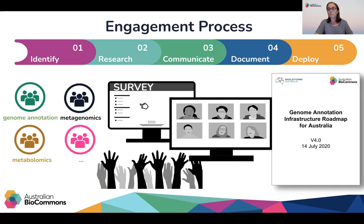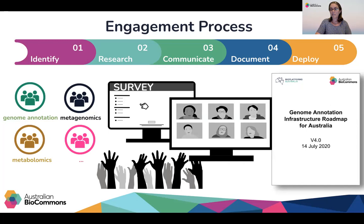To effectively understand researcher challenges and possible solutions, we have developed a five-step engagement process. In the first step, we identify communities of researchers that have known infrastructure challenges, largely defined by a biological method or technique in the life sciences field, such as de novo genome assembly, genome annotation, microbiome analysis or proteomics and others. The second step in the process is to research and review what defines each community's challenges and identify the common tools and methods used to undertake their technique. The third step is where we survey and discuss with the community their roadblocks and challenges and also some of the suggestions for solutions.